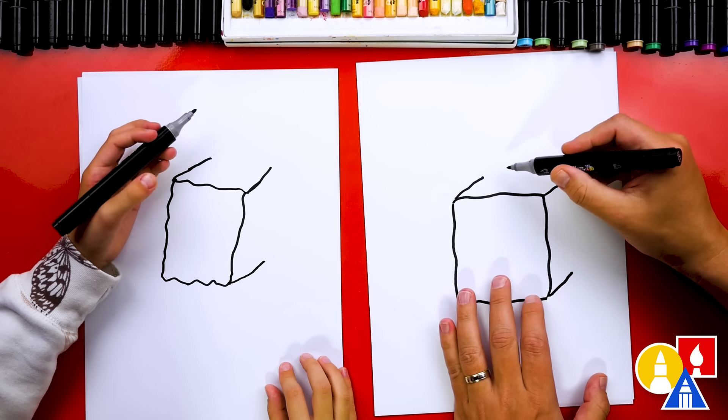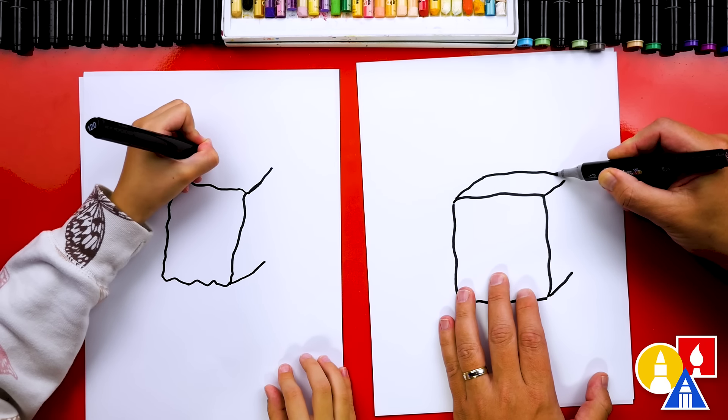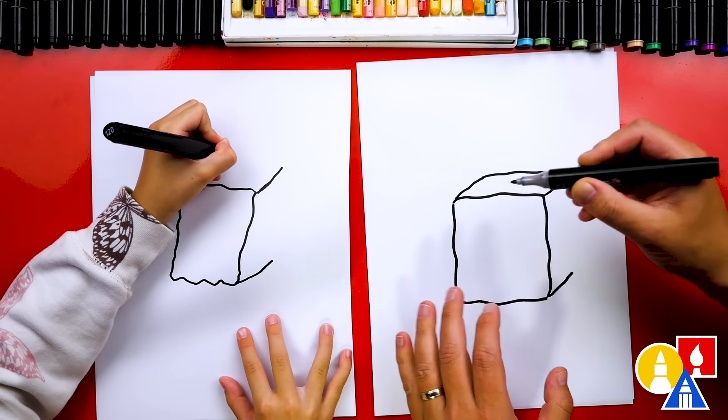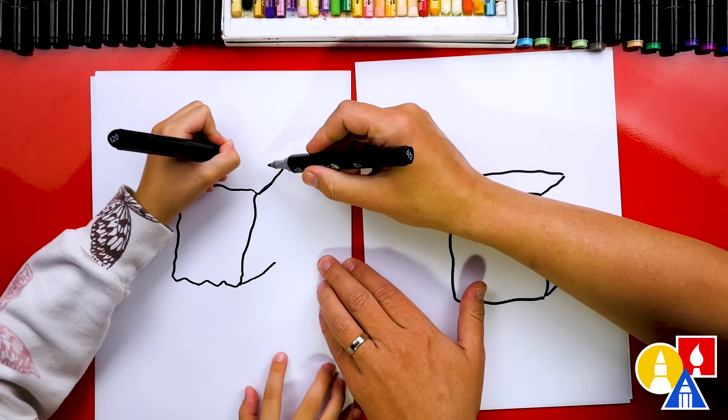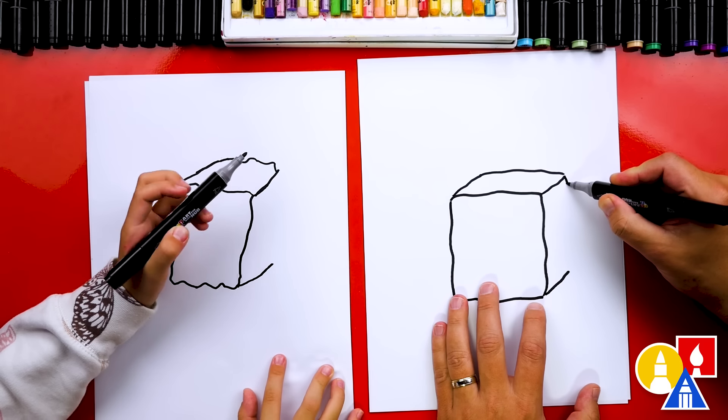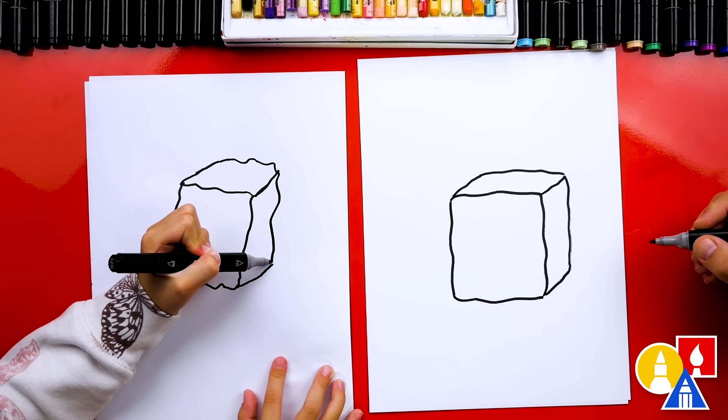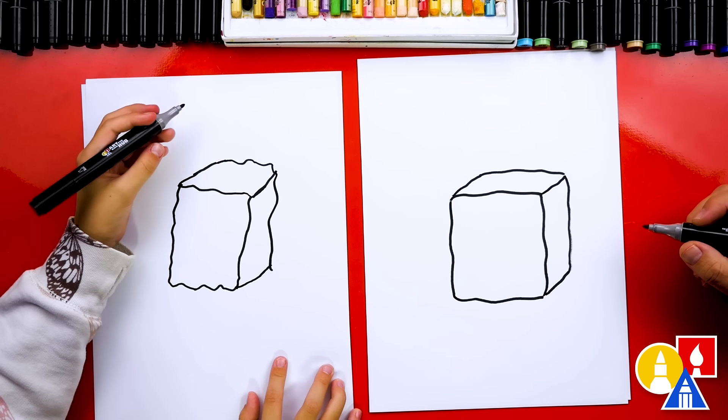Now we're ready to connect the back of our ice cube. So we're going to try to draw just a simple wavy line and connect. Oh, this one's a little bit longer. So I extended it. There you go. And then we're going to draw a wavy line down too. We did it. We finished our ice cube.